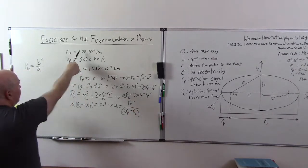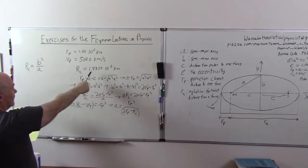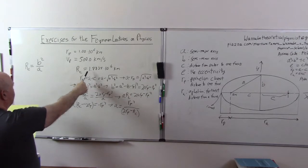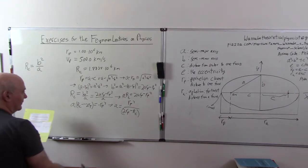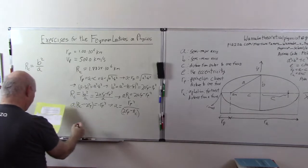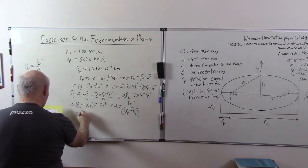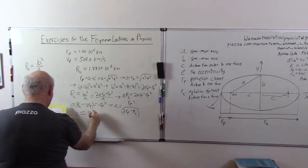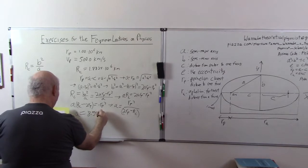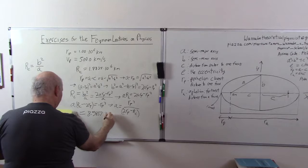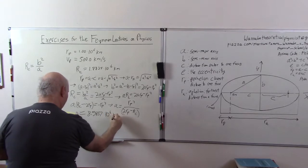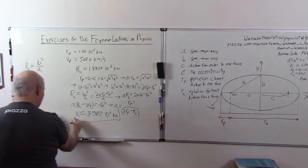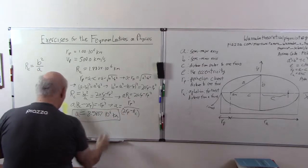Now we have RP from here and we have RC from here, so we just substitute, and we're going to get A is equal to 8.5837 times 10 to the 6th kilometers. So that's just about most of what we need.